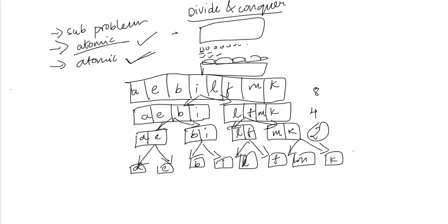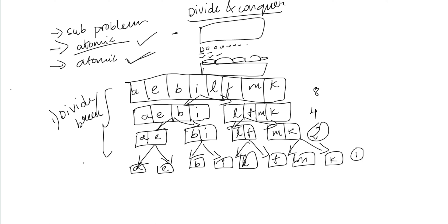We divide down to 2-character sub-problems. The three phases are: first, divide and break; second, conquer and solve; third, merge and combine. We reduce all problems down to their atomic level.